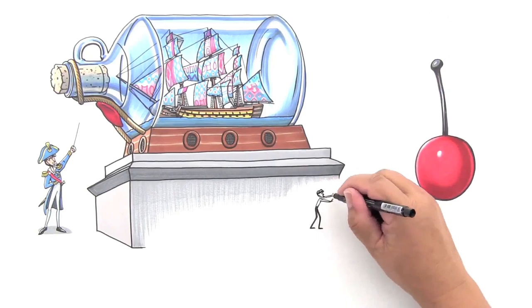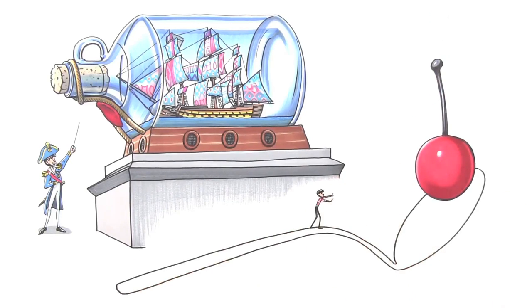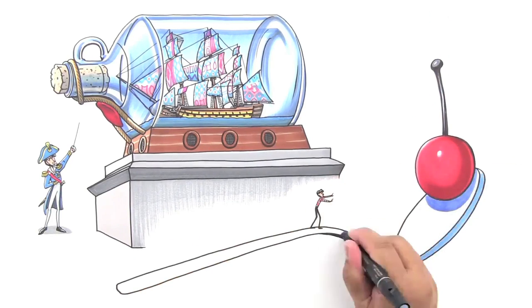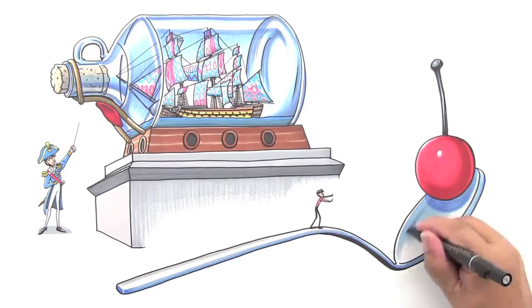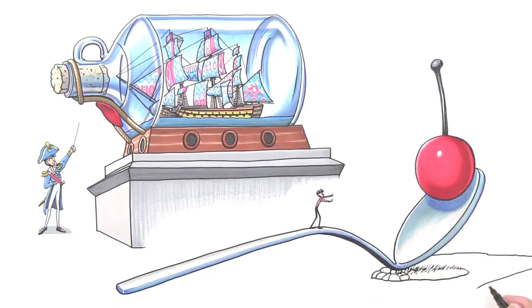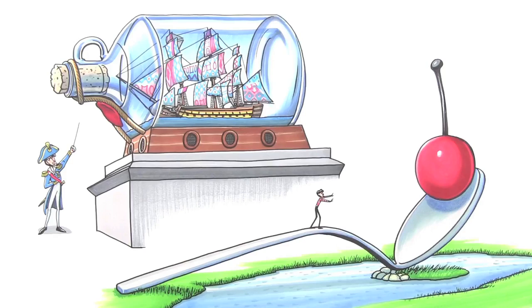Wait! That's Claes Oldenburg's sculpture, Spoonbridge and Cherry. Oldenburg appropriates the imagery of common objects and recreates them at a huge scale, as if a giant dropped something accidentally, making us look at them in a new way. Ever wonder what an ant feels like at a picnic? Well, there you go.